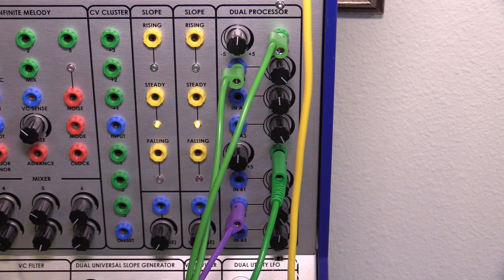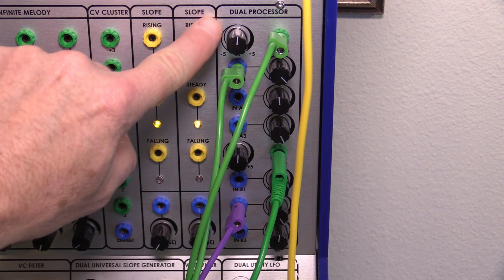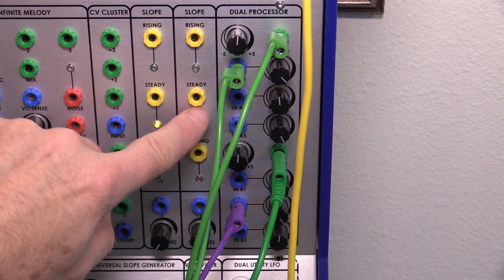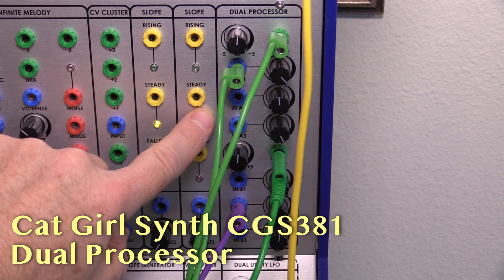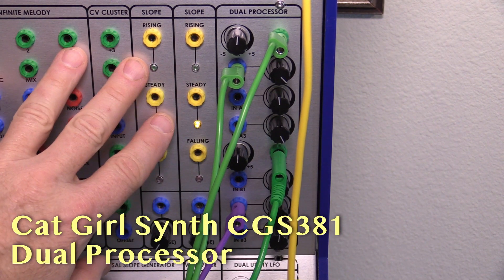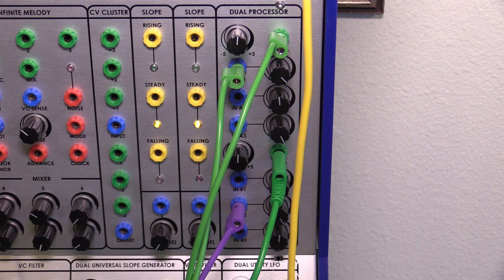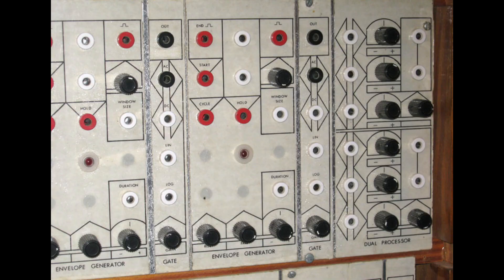Okay, so today on Under the Big Tree, we're going to be taking a look at the Dual Processor Serge Module. Now, this version is the Catgirl Synth 381 model, and it is found here inside of my LB Designs Marsh panel. However, it's a standard Serge Module that is used all over the place and has been around since the original Paperface designs.